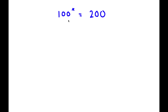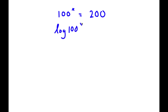In this problem, I have 100 to the power of x is equal to 200. To solve this, I'm going to first start by taking the log on both sides. So now I have log of 100 to the power of x is equal to log 200.